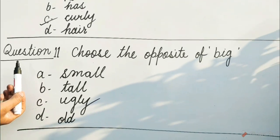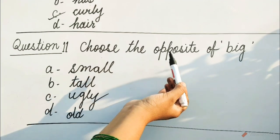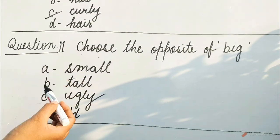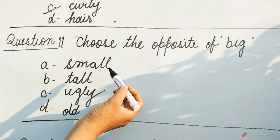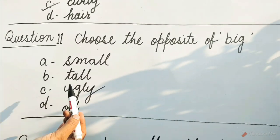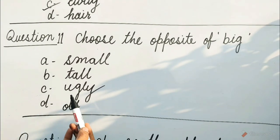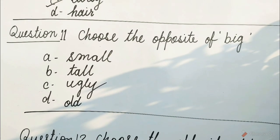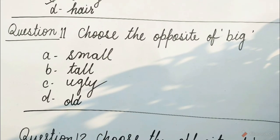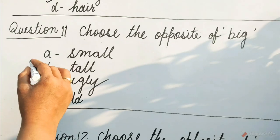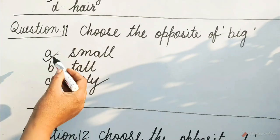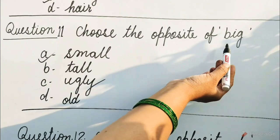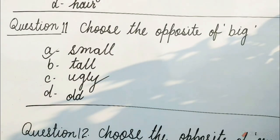Question 11: Choose the opposite of big. Options are A. Small, B. Tall, C. Ugly, D. Old. Guess children, which option will be correct? Yes, it is A option — Small. The opposite of big is small.